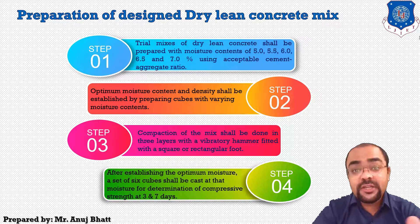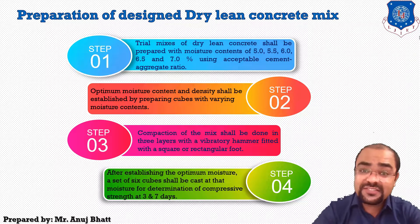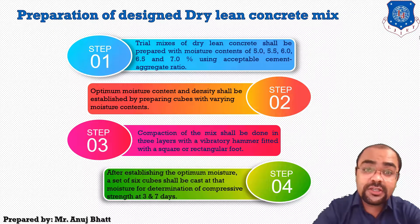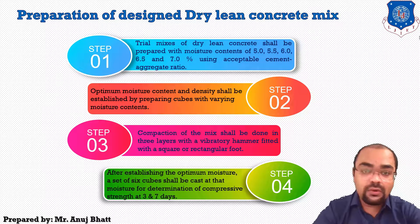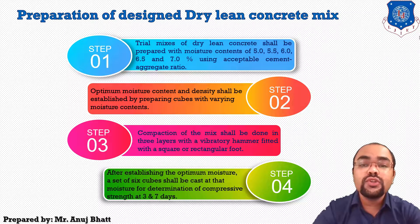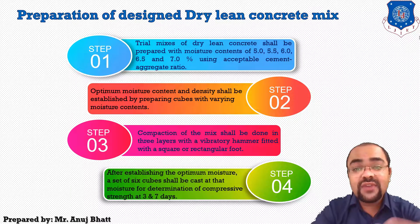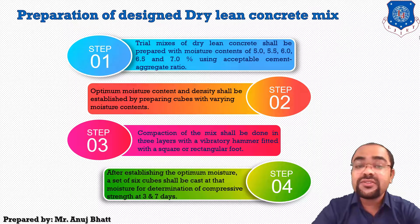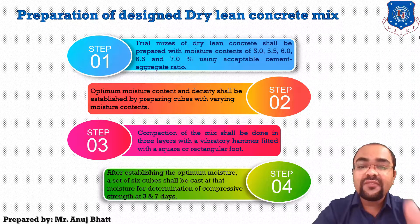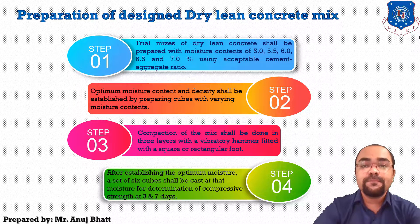The dry lean concrete shall be laid on the prepared granular drainage layer, since we are using this concrete as a sub-base or base layer. A drainage layer is also provided in those layers. The dry lean concrete sub-base shall be overlaid with the concrete pavement only after seven days of sub-base construction.